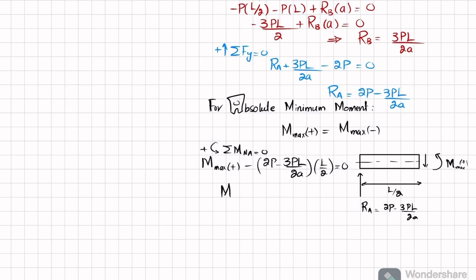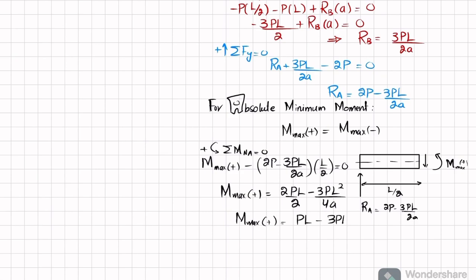From the moment equilibrium, M_max(positive) − [2P − 3PL/(2A)] × (L/2) = 0, giving M_max(positive) = PL − 3PL²/(4A). This is the maximum positive moment.